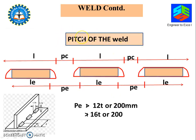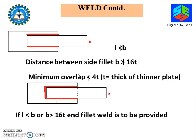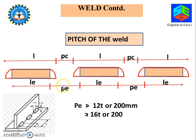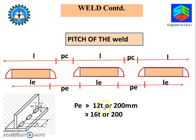Coming to the pitch of the weld — we have seen the pitch of the rivet. Same way, when you do a fillet weld, how much should the pitch be? There is a condition for minimum pitch. The effective pitch should not be more than 12T or 200 mm for compression, and 16T or 200 mm for tension. Normally we can take 16T or 200 mm since most cases involve tension only.